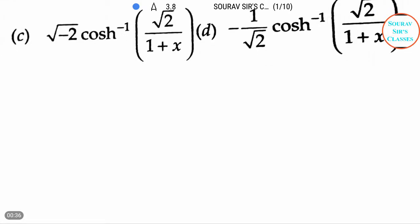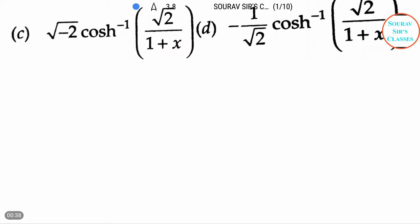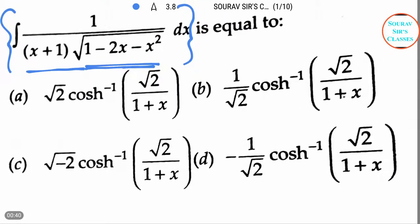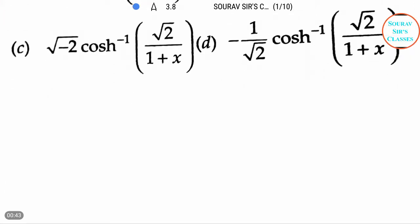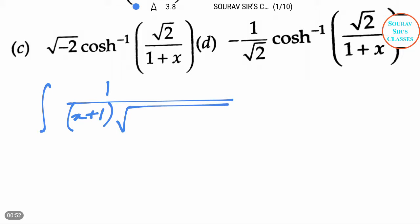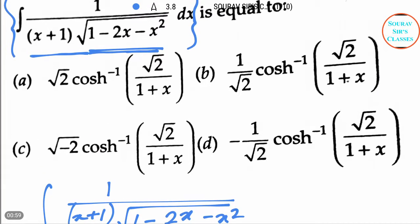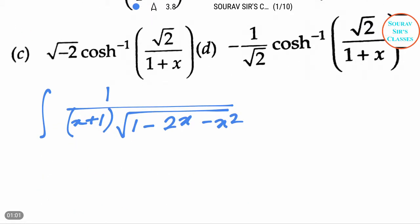Our sum is integration of 1 by (x+1) root over (1 minus 2x minus x squared) dx. Let us assume that this whole part is equal to I.